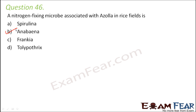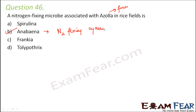Azolla is a fern which is purposely grown in rice fields because it has the capability to harbor Anabaena, which is a nitrogen-fixing cyanobacterium. Anabaena lives in the leaves of this Azolla fern and fixes atmospheric nitrogen into the soil, which enriches the soil with nitrogen — of great importance to agriculture.